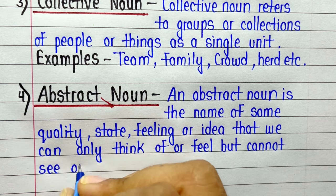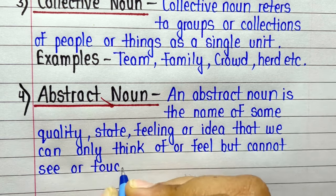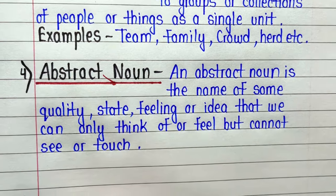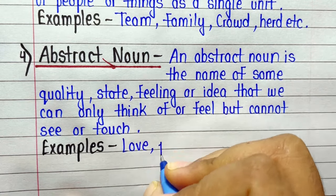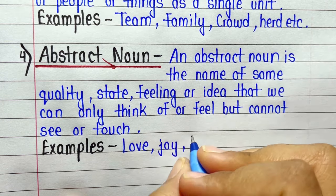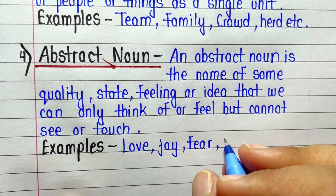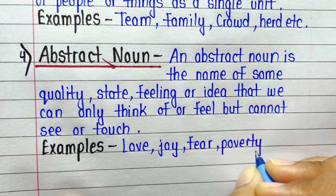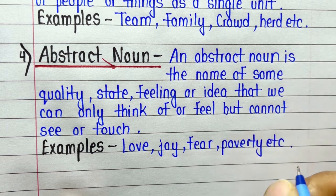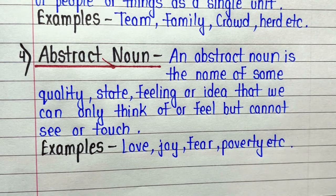Next one is Abstract Noun. An abstract noun is the name of some quality, state, feeling or idea that we can only think of or feel but cannot see or touch. Examples: love, joy, fear, poverty, etc.